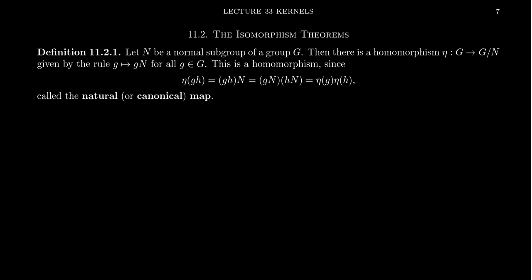It is natural to send an element to the coset that contains it. If we don't know any of the structure of the group, how would we decide where things go? So the natural choice is to send little g to the coset that contains little g. This is, in fact, a homomorphism. Notice what happens: eta of GH — since this is a normal subgroup — GH·N becomes G·N times H·N, which is just eta of G and eta of H.